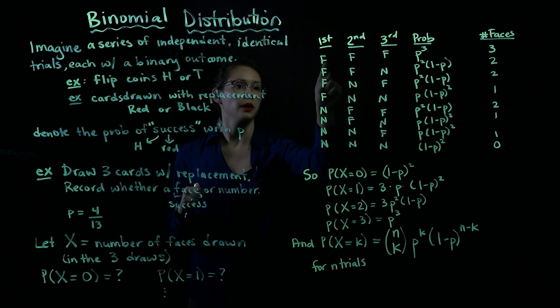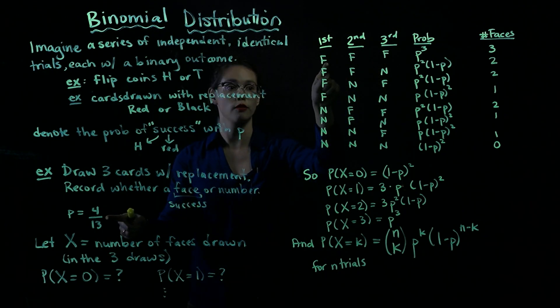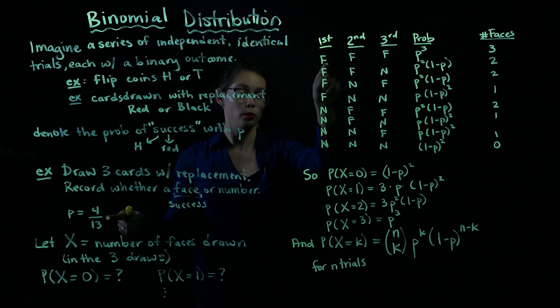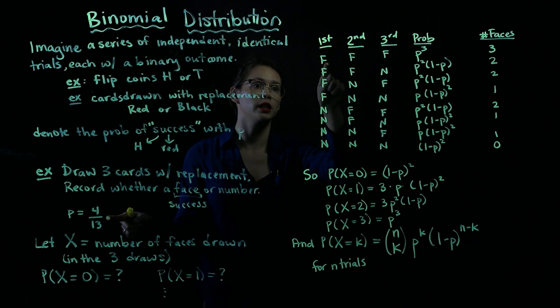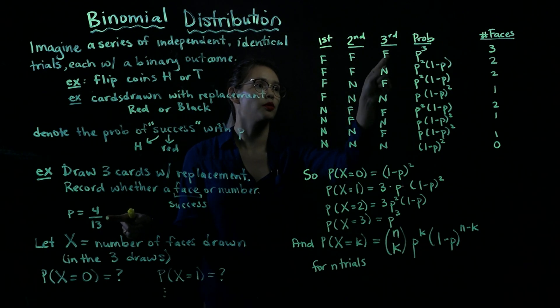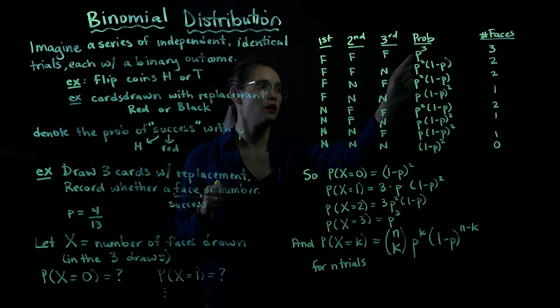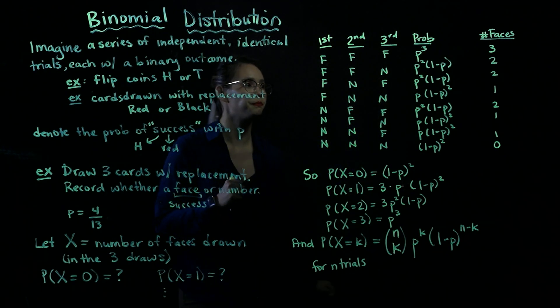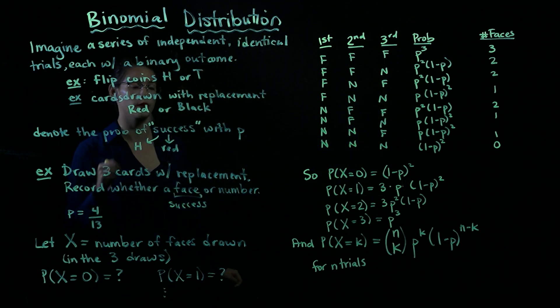Now let's think about, well, what's the probability of getting a face, a face, and a face? Well, the probability of one face is 4 thirteenths. And we know that we just use our multiplication rule here. So 4 thirteenths times 4 thirteenths times 4 thirteenths is the probability of getting face, face, face. So P cubed, where P is 4 thirteenths.